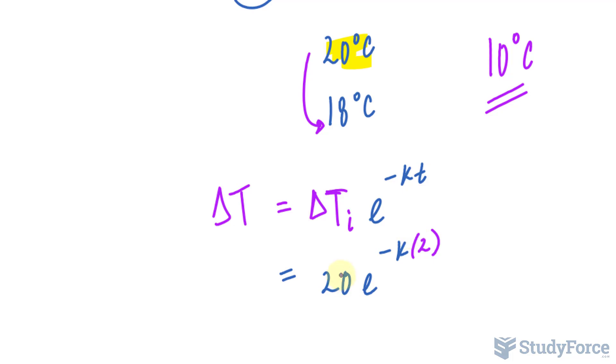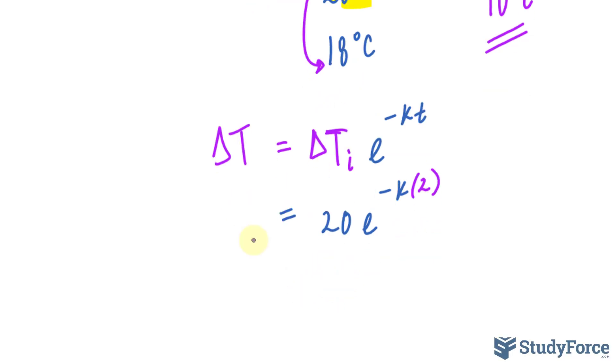So the units of this number is minutes, and the units of this number is degrees Celsius. Of course, after two minutes, the difference becomes 18 degrees.